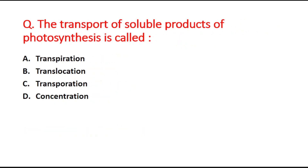Next question: the transport of soluble products of photosynthesis is called blank. Option A is transpiration, option B is translocation, option C is transportation, and option D is concentration. The right answer is option B, translocation.